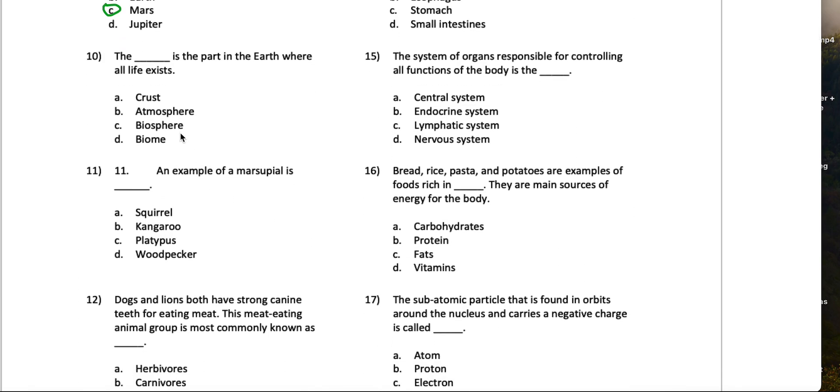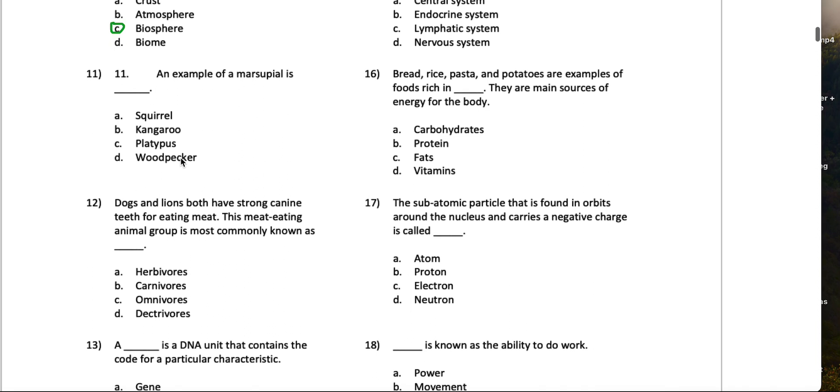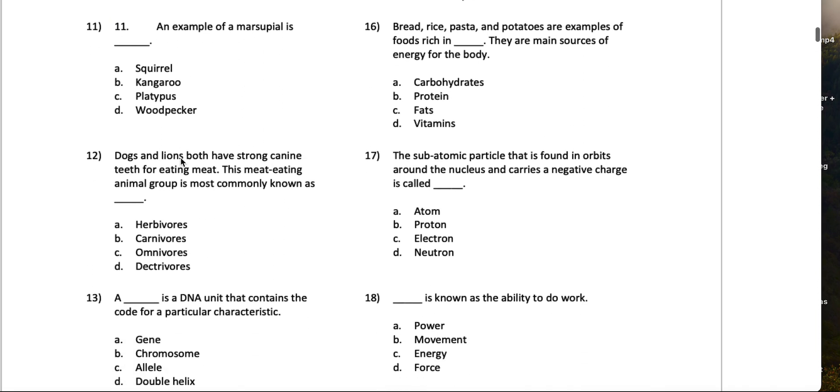Number 10, the blank is the part in the Earth where all life exists. Crust, atmosphere, biosphere, biome. I'd say the biosphere. It has bio in it and it has sphere, so it has to be biosphere. An example of a marsupial is... every time I think of marsupials I think of kangaroos.